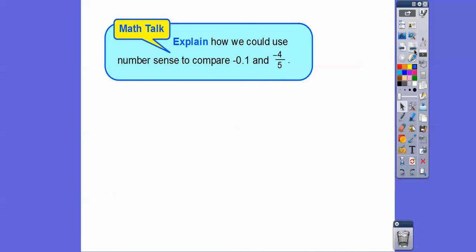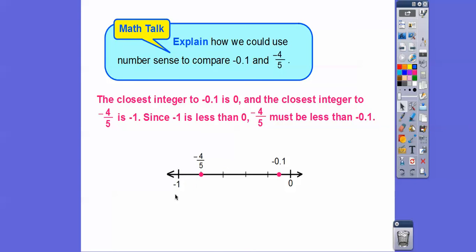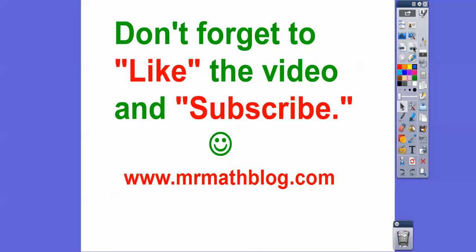So explain how we can use number sense to compare negative 0.1 and negative 4/5. The closest integer to negative 0.1 is zero, and the closest integer to negative 4/5 is negative 1. Since negative 1 is less than zero, negative 4/5 must be less than negative 0.1. Hope that makes sense — take care!